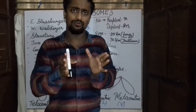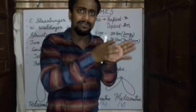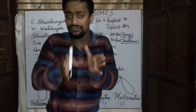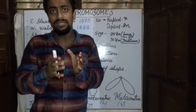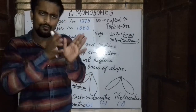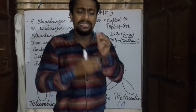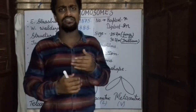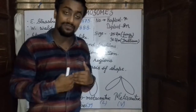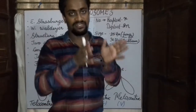These chromosomes consist of hereditary characters or hereditary information in the form of genes. The hereditary information is the information which needs to be transmitted from the parents to the offspring.